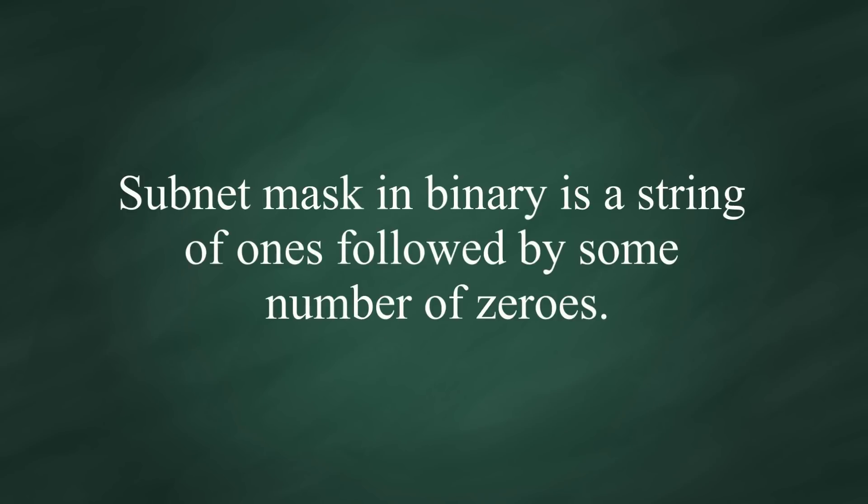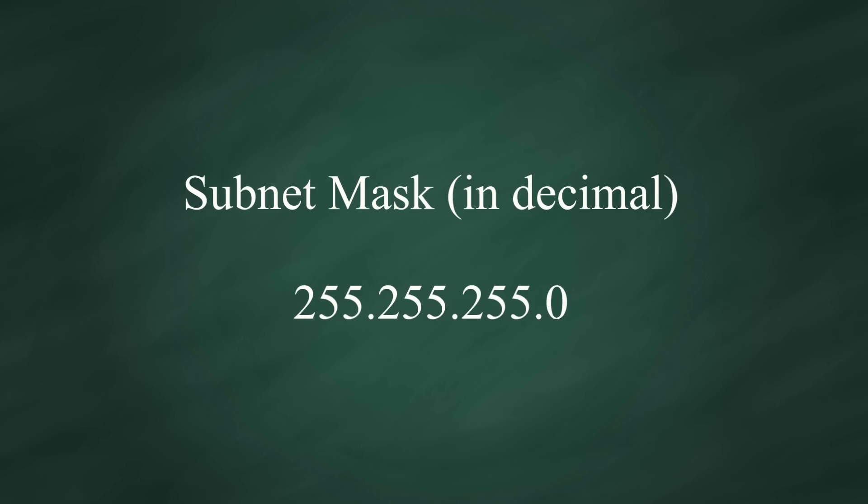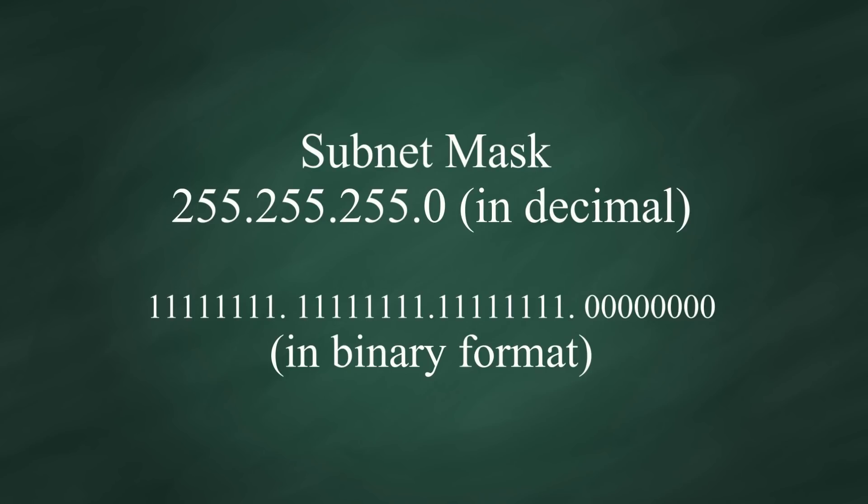Subnet mask in binary is a string of ones followed by some number of zeros. For example, my computer's subnet mask is 255.255.255.0. If I convert them into a binary number, it looks like this. There are 24 ones followed by 8 zeros.